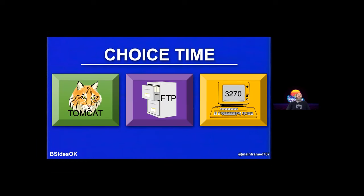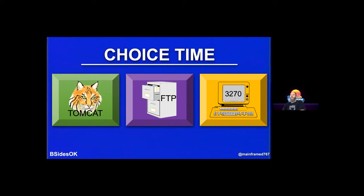Now we have a choice: do we want to look at Tomcat, FTP, or one of the 3270 sessions? I'm going to wait for people to post in Slack. One vote for FTP, one for Tomcat, three for 3270 — so it looks like we're doing 3270. Let's start poking at TN3270.